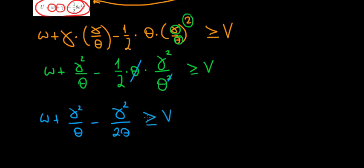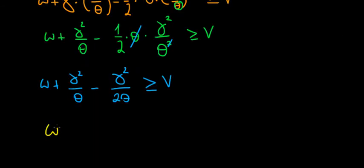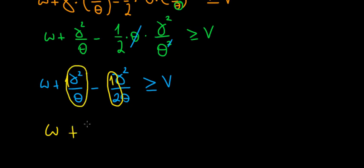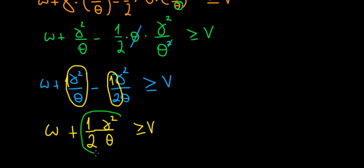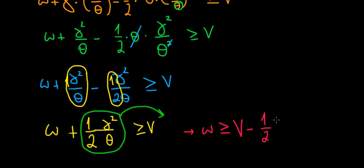Let's write it in a simpler way. We have W plus 1 times gamma squared minus one half times gamma squared, all divided by theta. So we're subtracting a half from the full term, leaving us with just one half. Therefore W plus one half times gamma squared divided by theta must be greater than or equal to V. Taking that term to the other side to isolate the wage, the minimum wage is equal to V minus one half times gamma squared divided by theta.